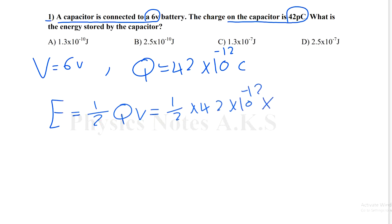I get the E, 1.26, multiply 10 to the power negative 10, which is almost 1.3, which is 1.3 times 10 to the power negative 10 joule. So which answer is that? It is A.